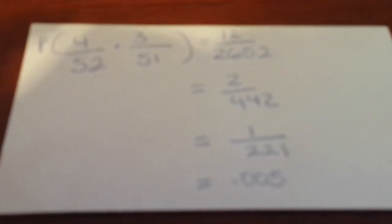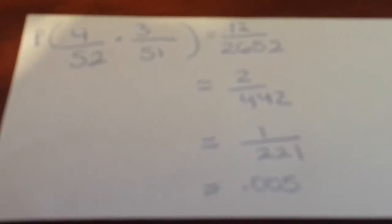We simplify that to 2 over 442 and then we simplify it once again which is 1 over 221.